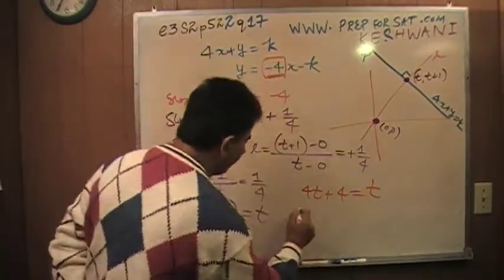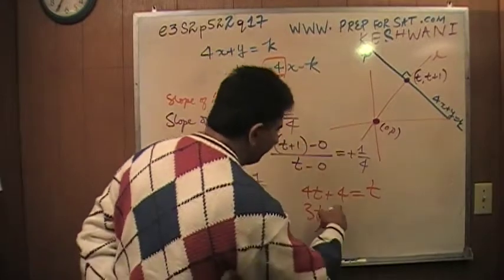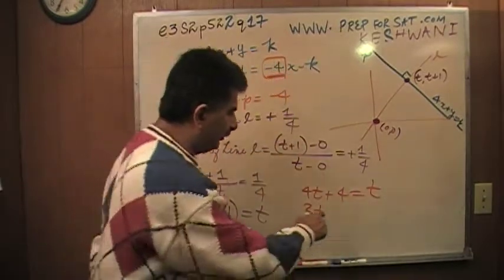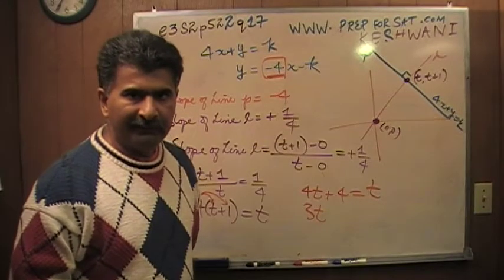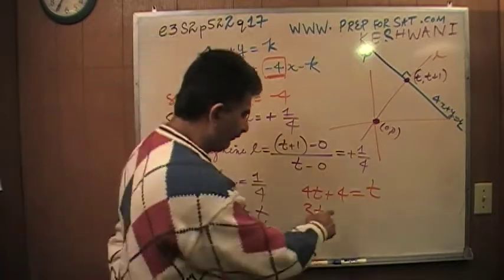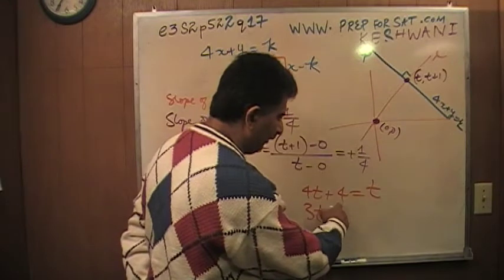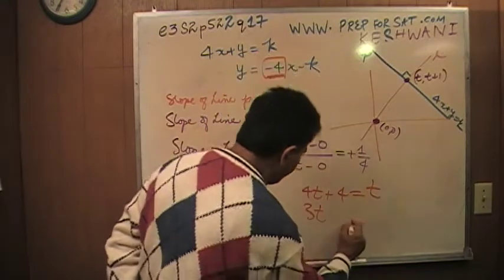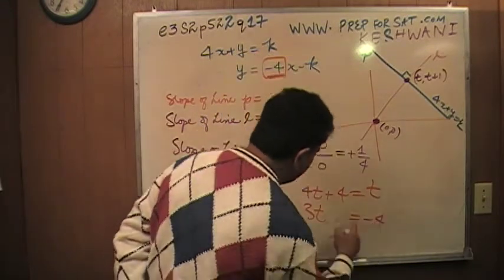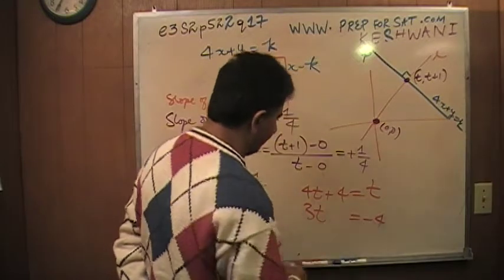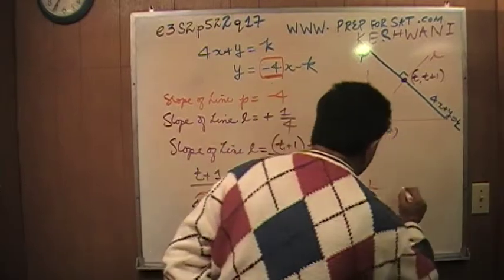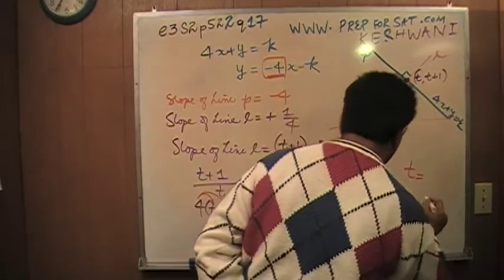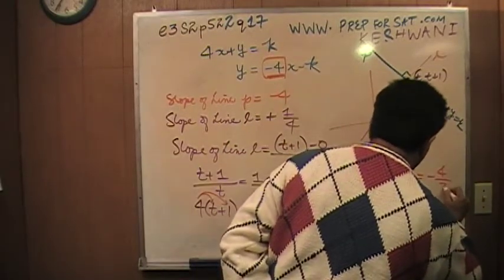Subtract T from both sides. In other words, bring this T to this side, it becomes three T, and bring this four to the other side. How do I bring the four to the other side? That's just a grown-up way, the adult way, of saying subtract four from both sides. If I subtract four from this side, it becomes zero, and if I subtract four from this side, I get a negative four here. So that's what happens. If you bring this four to the other side, this positive four becomes negative four. So three T equals negative four.